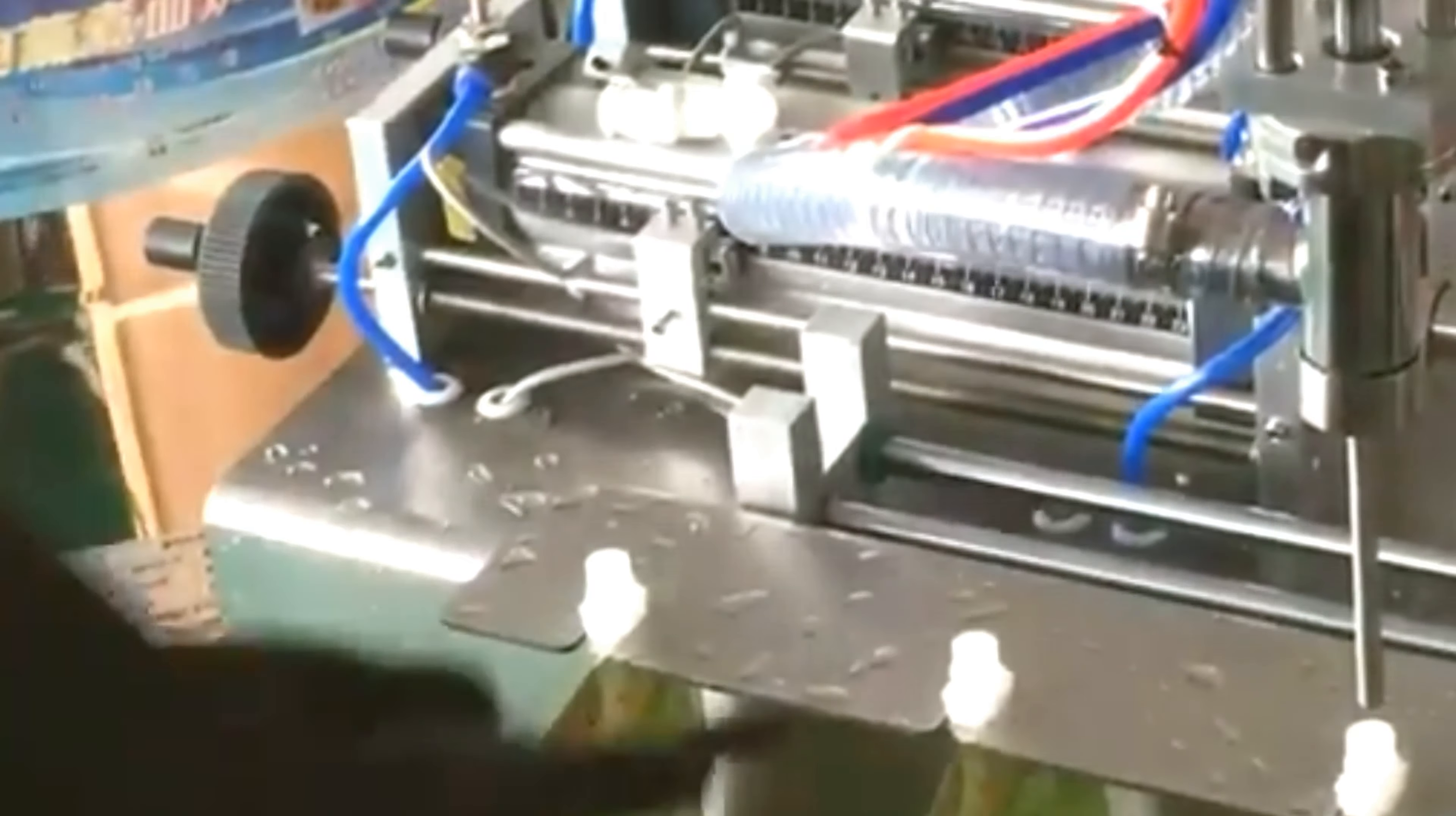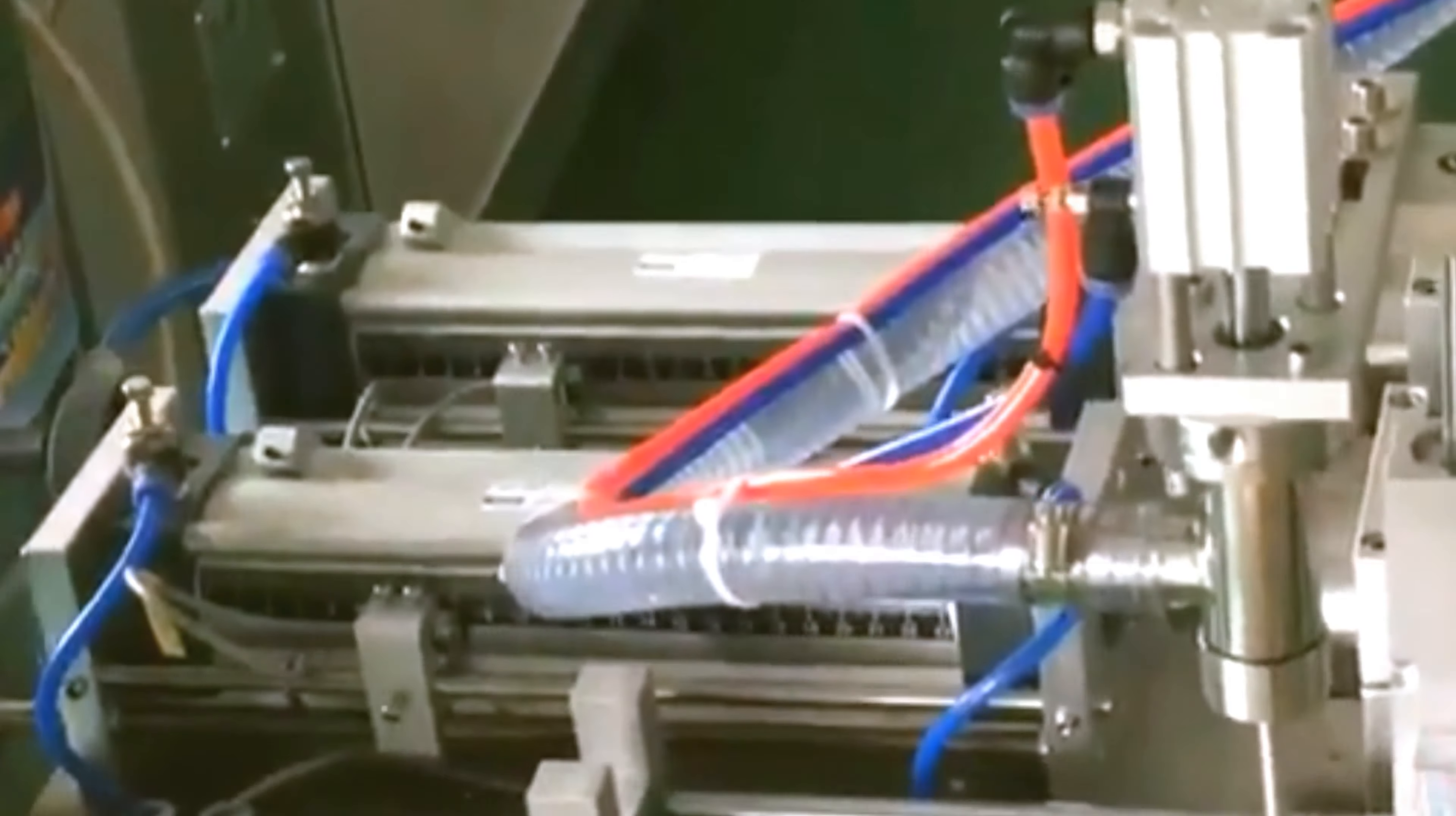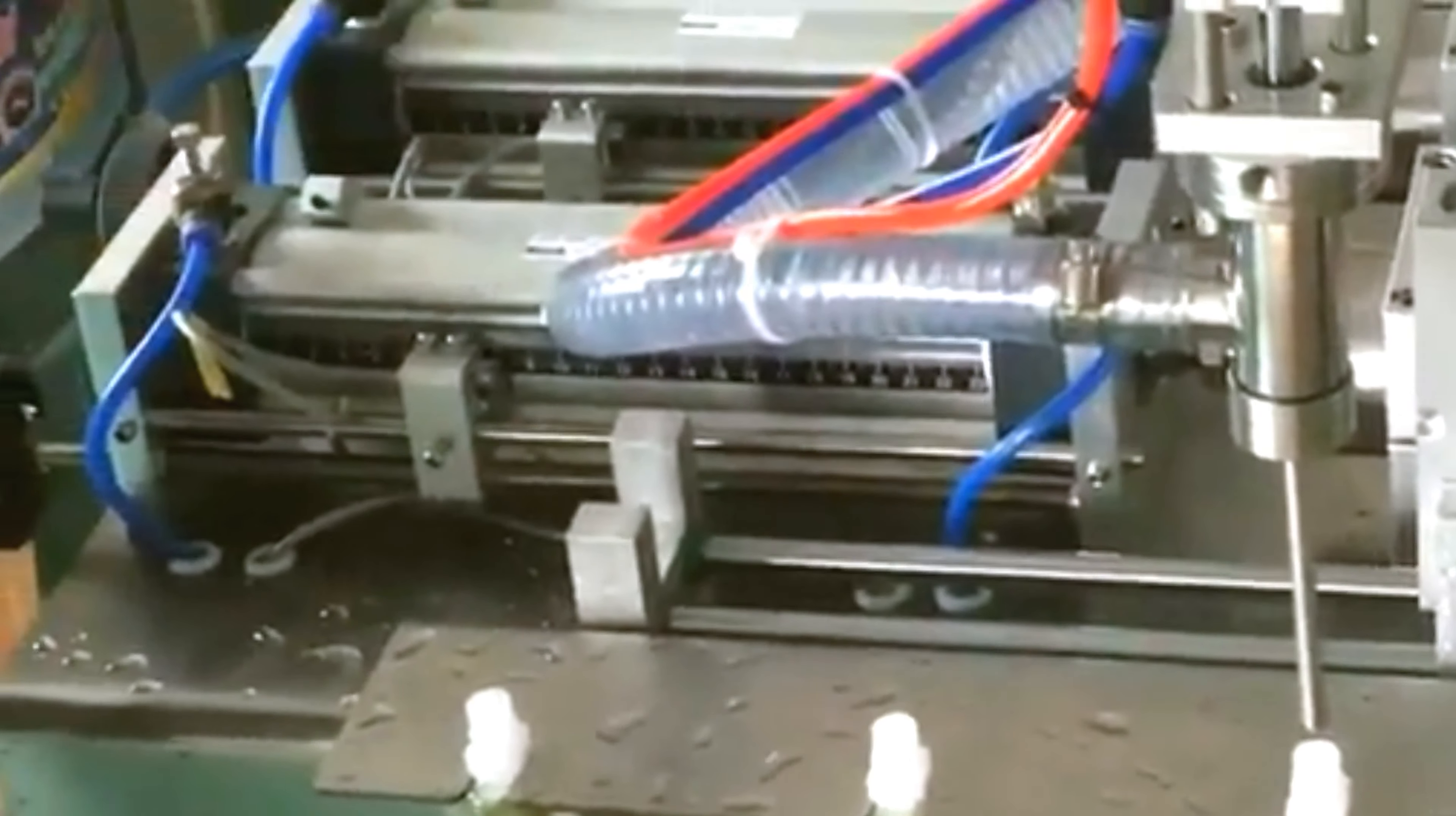Okay, this is the piston filler. This piston filler suits for products like juice, water, even paste, and sauce. It's the core of this kind of machine.